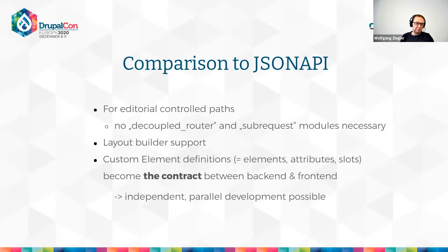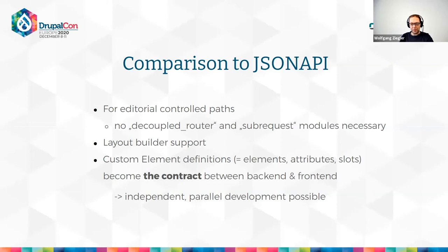Compared to using Drupal core's JSON API: a key advantage is editorial-controlled paths — you don't need to configure additional modules like decoupled router and sub-request modules to answer requests in a simple response. That works out of the box with custom elements markup. Layout Builder support is also included. What I particularly like is that the custom element definitions — which elements you have, their attributes and slots — become the contract between backend and frontend, enabling parallel development and allowing both sides to evolve separately.